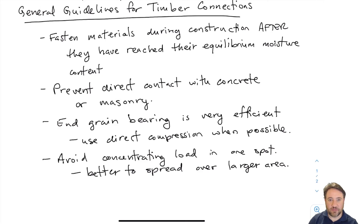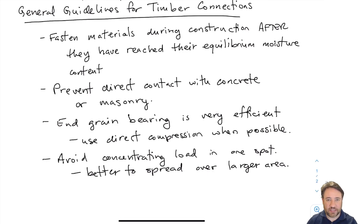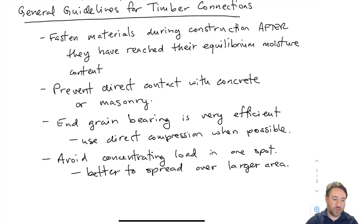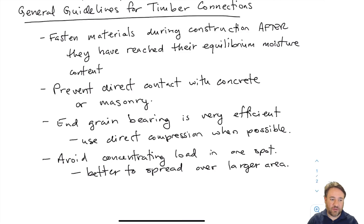That could cause problems for the strength of our connections. This is a problem we wouldn't run into if we were installing timber at the same condition it was going to live at. The standard also specifically says that when we install timber connections — especially if installed wet — we have to go back and make sure all the bolts are tight later, because if we install bolts when wet and things shrink, the bolts could become loose, leading to a potentially unstable connection.